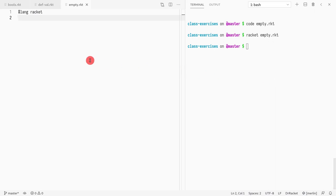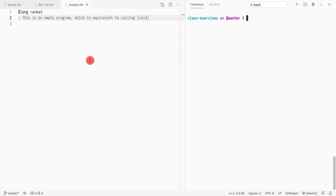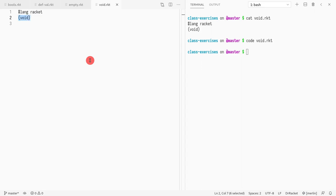That is the runtime expression void, which you can get by calling a function void. This is a special function that just returns void. And it's the only value that is not printed to the screen.